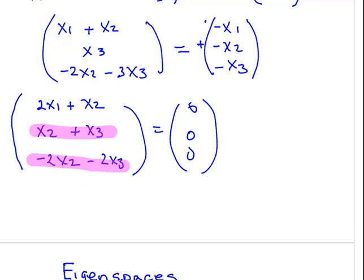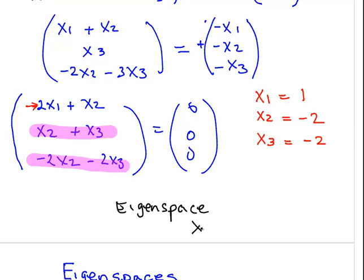Essentially what we're going to do is the same thing again. We're going to let x1 equal to 1. And therefore, x2 is going to be minus 2, and x3 is also going to be equal to minus 2. So the eigenspace for lambda equals minus 1 is alpha. Remember, these are only proportions, multiples of an unknown constant alpha: 1, minus 2, minus 2. That's the second eigenspace.